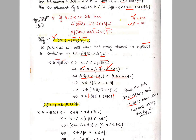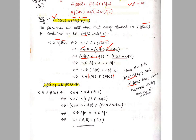Next, we prove that A \ (B ∩ C) = (A \ B) ∪ (A \ C). Using the previous method, if x belongs to A \ (B ∩ C), this implies x belongs to A and x does not belong to B ∩ C.